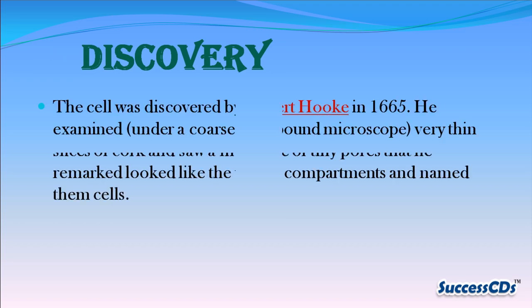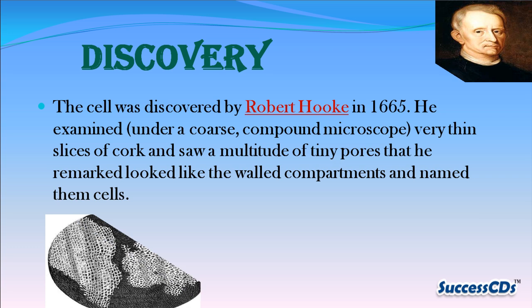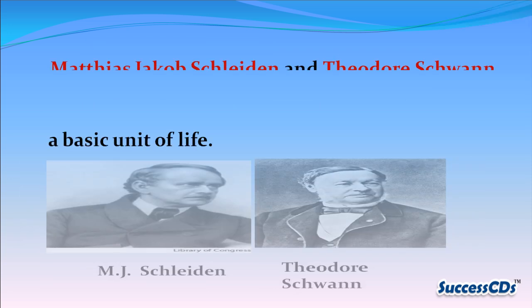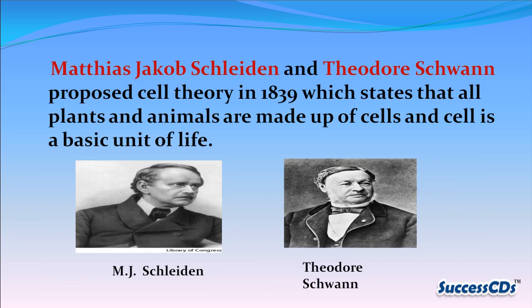The cell was discovered by Robert Hooke in 1665. He examined very thin slices of cork under a coarse compound microscope and saw a multitude of tiny pores that he remarked looked like wall compartments, and named them cells.